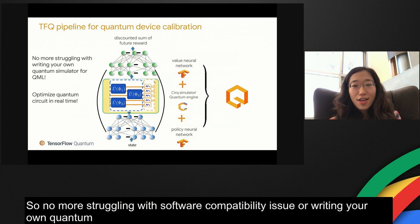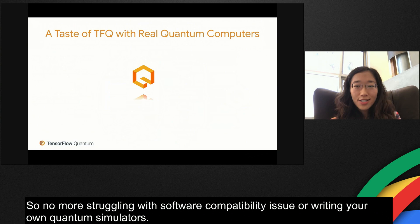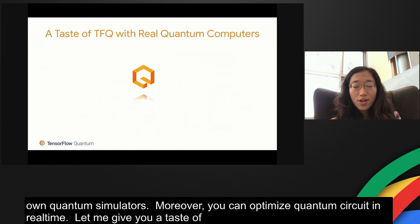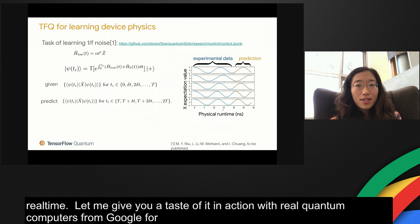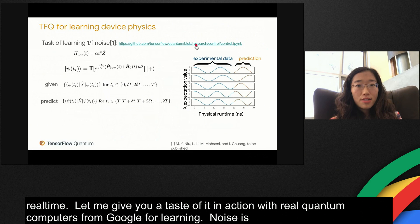Now you might be eager to see how TFQ works in action. Let me give you a taste of it with real quantum computers from Google for learning 1/f noise for a device. 1/f noise is notoriously prevalent among solid-state qubits. It manifests as a slow drifting term in an error in the qubit frequency, parameterized by this Hamiltonian, where F represents the amplitude of the 1/f noise. E represents a specific kind.